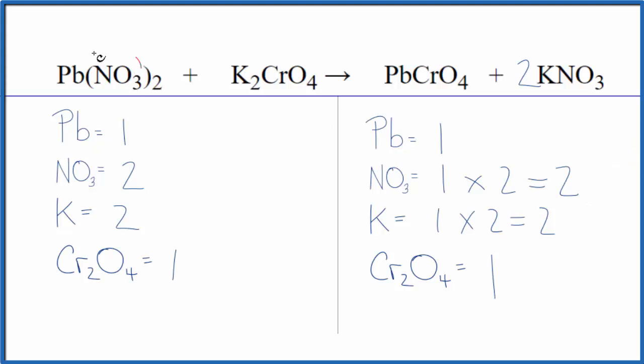These polyatomic ions, when they stay together, you have them on both sides, you can count them as one thing. Makes it a lot quicker to balance. Either way, you'll get the same answer. This is just very fast.